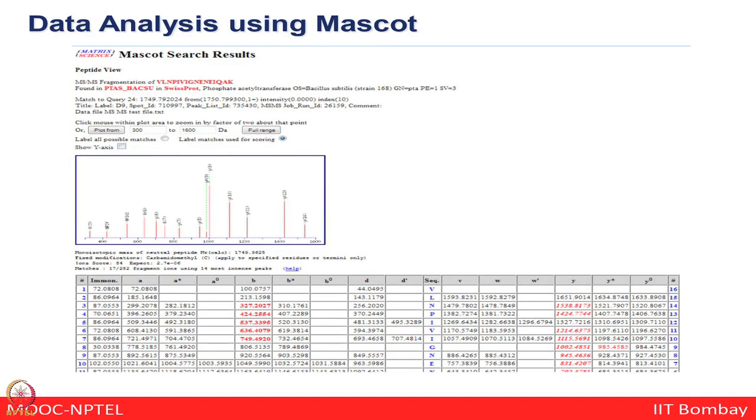What you look for from this kind of data set is whether you are able to obtain a good number of B and Y ions generated from fragmentation. When doing collision-induced dissociation in MS/MS, fragmentation of the peptide bond — the CO-NH bond — generates B and Y ions. The B ions are retained more towards the amino terminal and the Y ions towards the carboxy terminal.